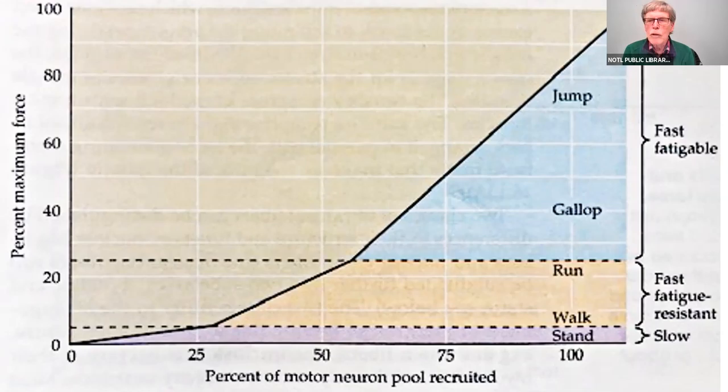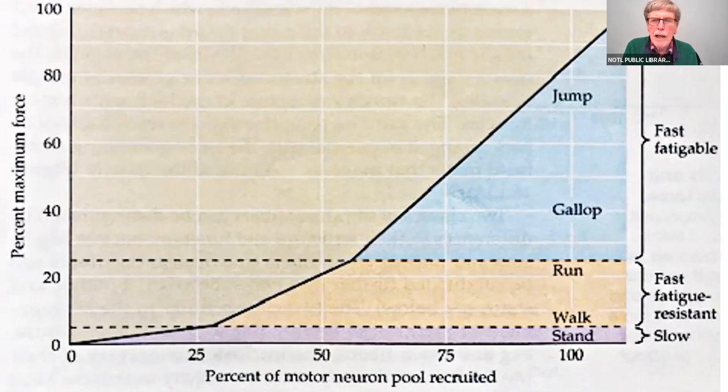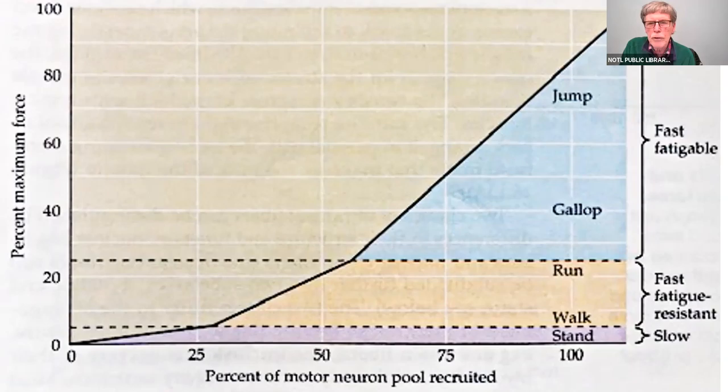Those large fast-fatigable motor units are what you'd call 100-meter dash motor units — after that, they've pooped out. I've simplified this by separating into three groups, but in reality it's a continuous spectrum of units.